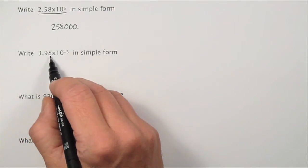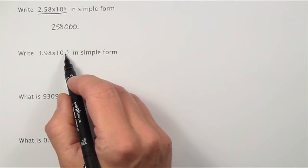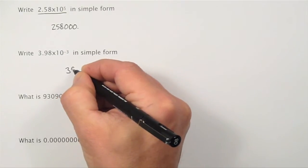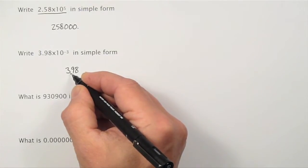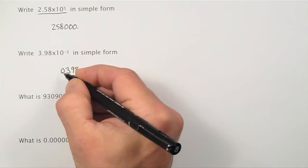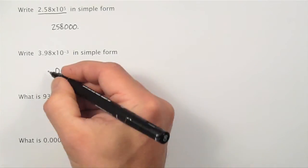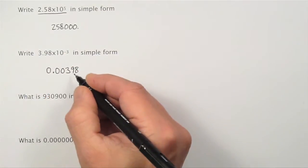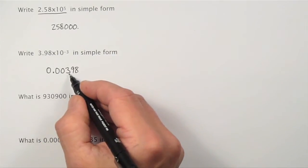Write 3.98 times 10 to the minus 3 in simple form. In this case, the minus tells me that I need to move the decimal point in the opposite direction. I'll write down 3, 9, 8. The decimal point was here and I need to move it 1, then I'll need another 0, that's 2, another 0, 3. It's usual to put a 0 in front of the decimal point as well. So the answer is 0.00398.